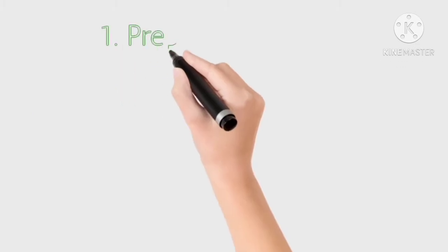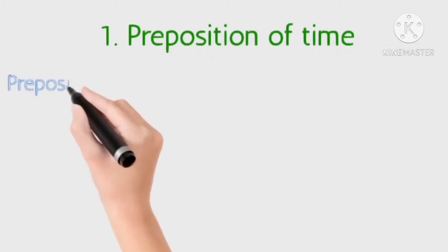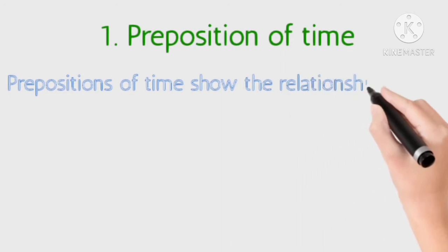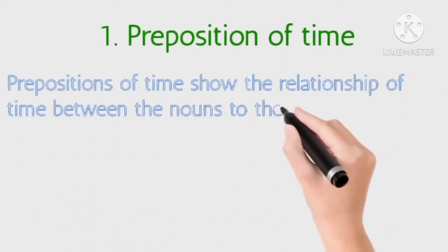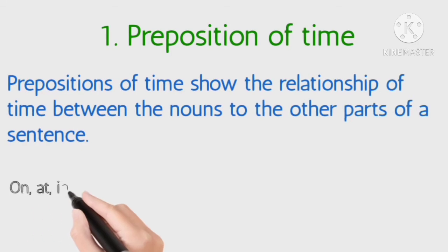The first one is prepositions of time. Let us discuss this. Prepositions of time show the relationship of time between the nouns to the other parts of a sentence.